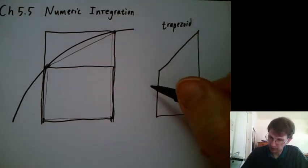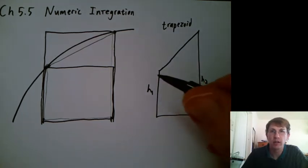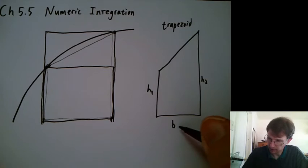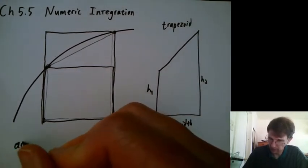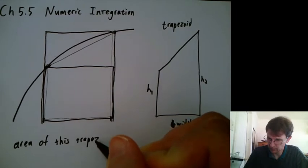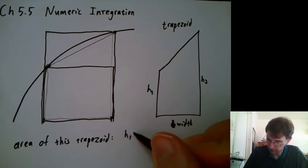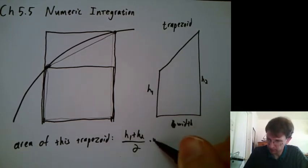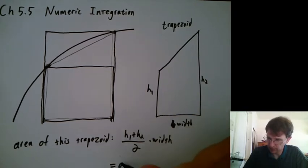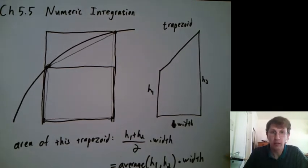And what's the area of a trapezoid? I know we've talked about this in another video, but it doesn't hurt to think about it again. I can call this height 1 and height 2 and call this the width. Think about it before I write it down. It's height 1 plus height 2 over 2 times the width, which you could think of as the average of height 1 with height 2 times the width.